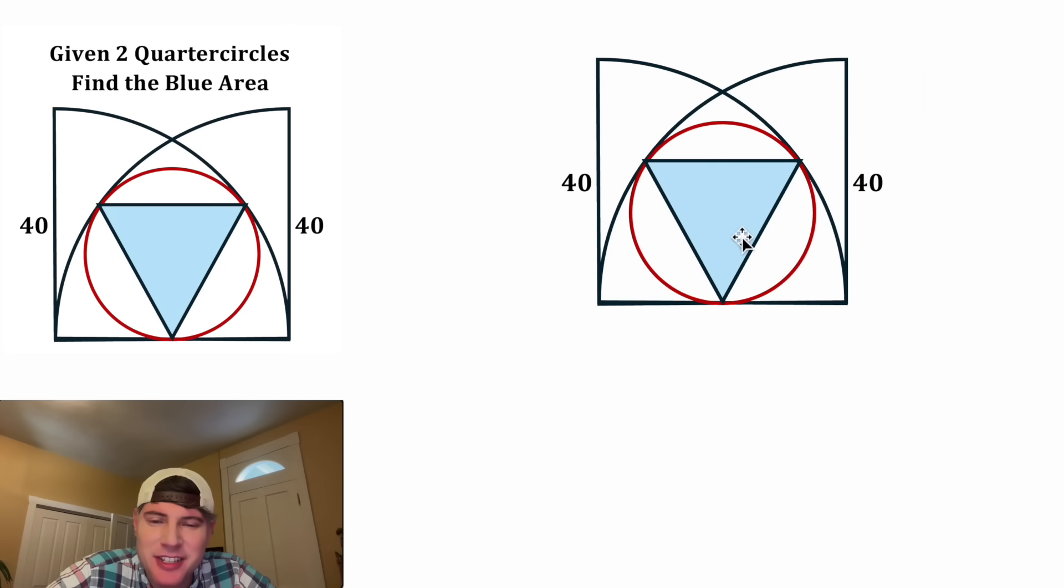First, I'm noticing they don't tell us this is an equilateral triangle. I don't know that it is. But I do know that we have symmetry here. Since the radius of the quarter circle is equal to 40, this would split into 20 and 20.